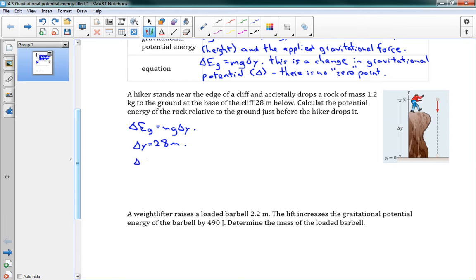So we can say delta EG, we've got our mass, 1.2 kilograms, times G, 9.8 meters per second squared, times delta Y, 28 meters. And that gives us 3.3 times 10 to the 2 joules. And that's our gravitational potential.